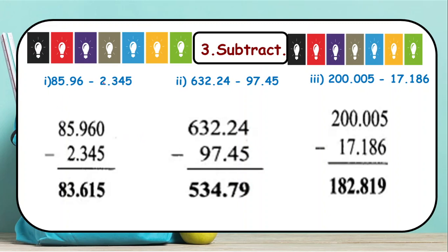Now see, in the first subtraction example, after the decimal there are 3 digits, so we adjust accordingly and go for the subtraction as we do in the regular case. The result is 83.615. Then 632.24 minus 97.45 gives 534.79. And 200.005 minus 17.186 gives 182.819.